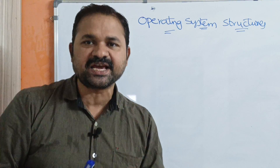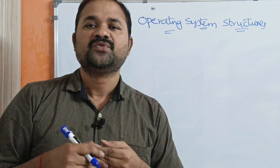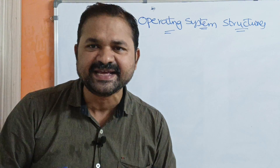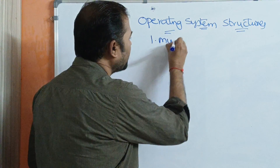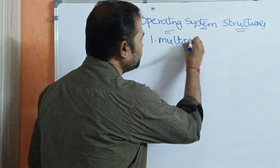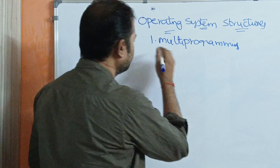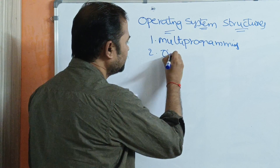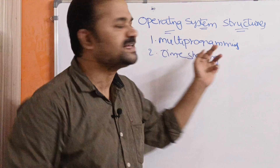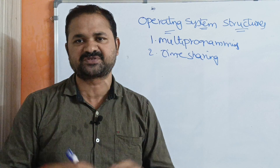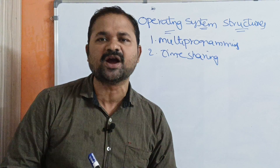Now let us discuss about operating system structures. We have mainly two types of operating system structures. The first one is multiprogramming operating system, and the second one is time sharing operating system. Operating system structures and types of operating systems are both the same.